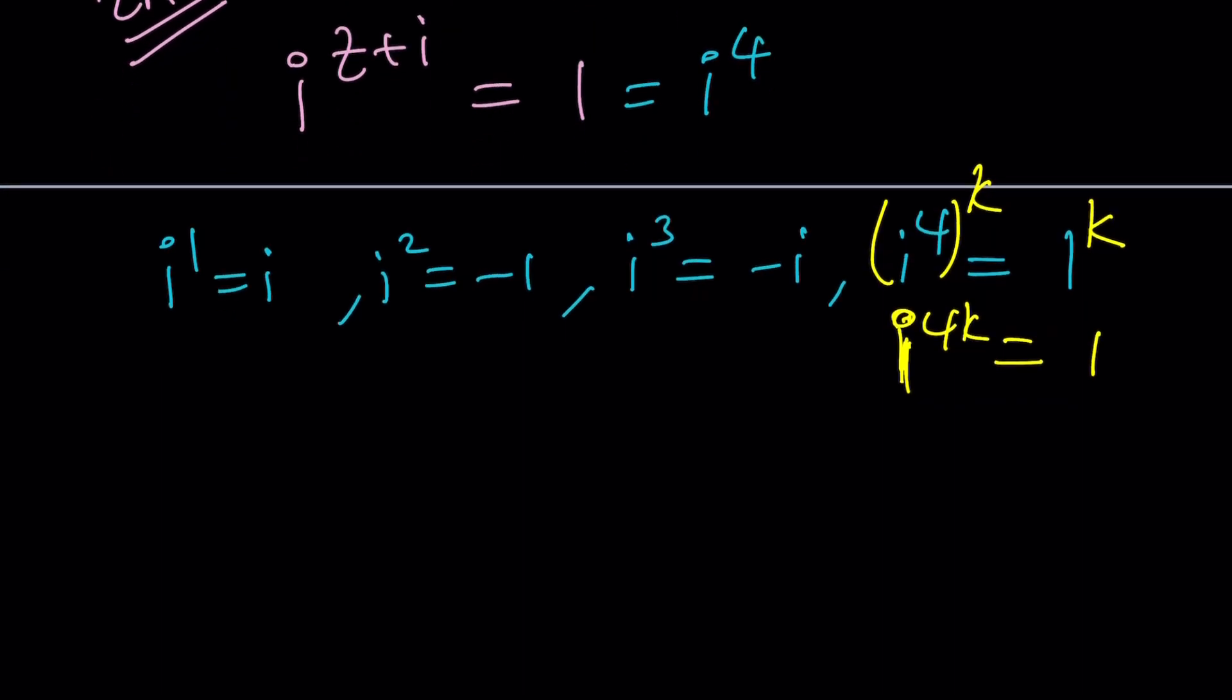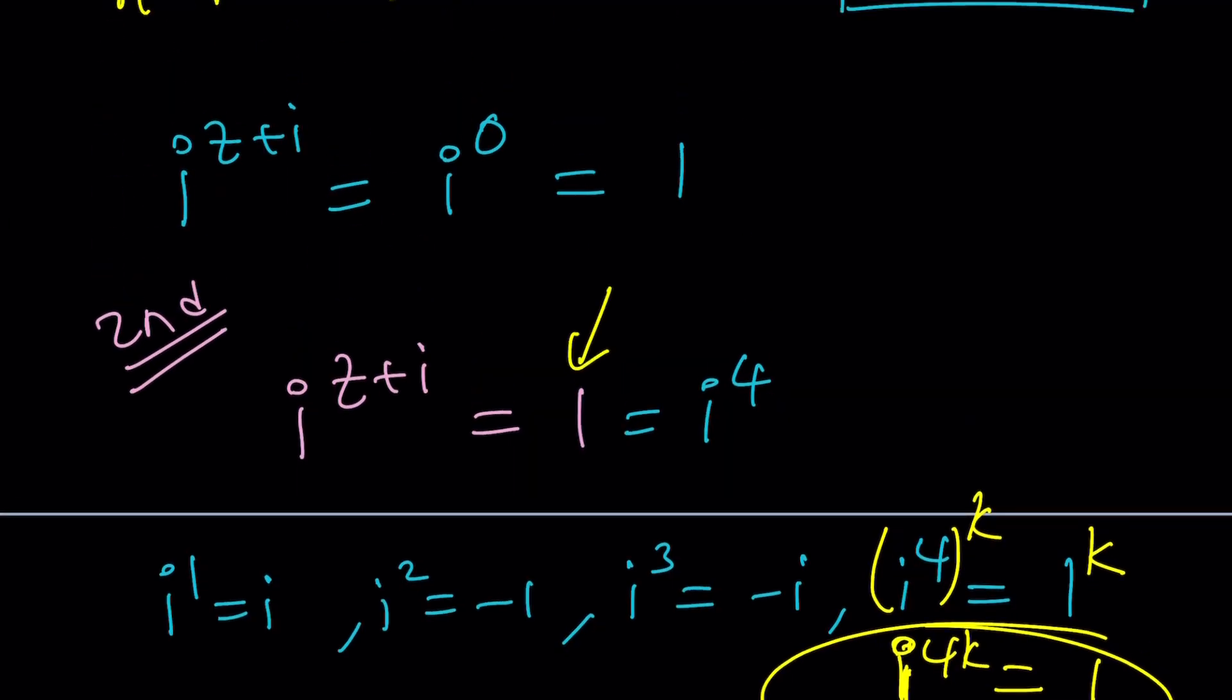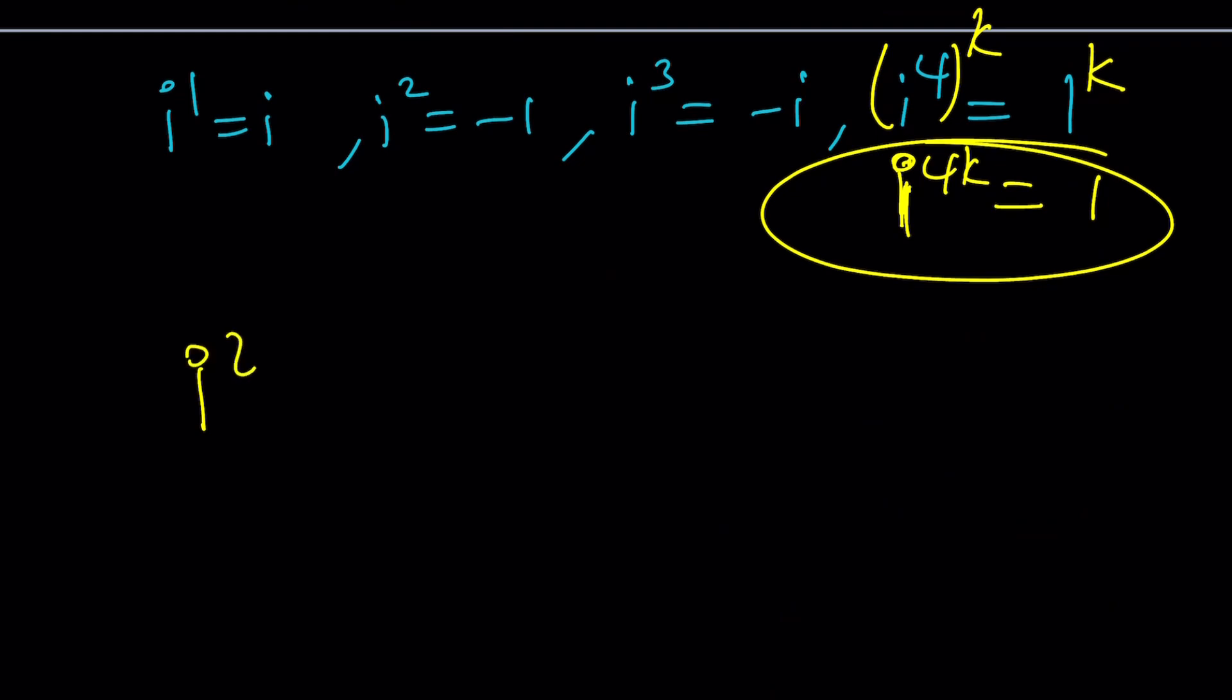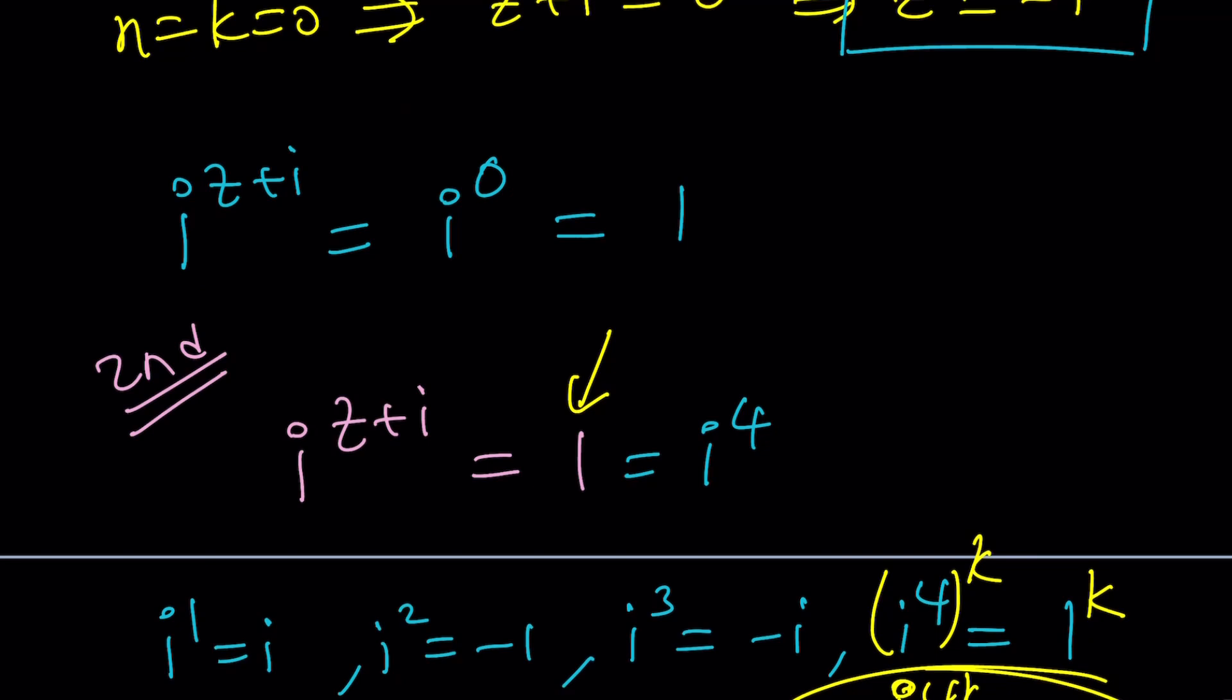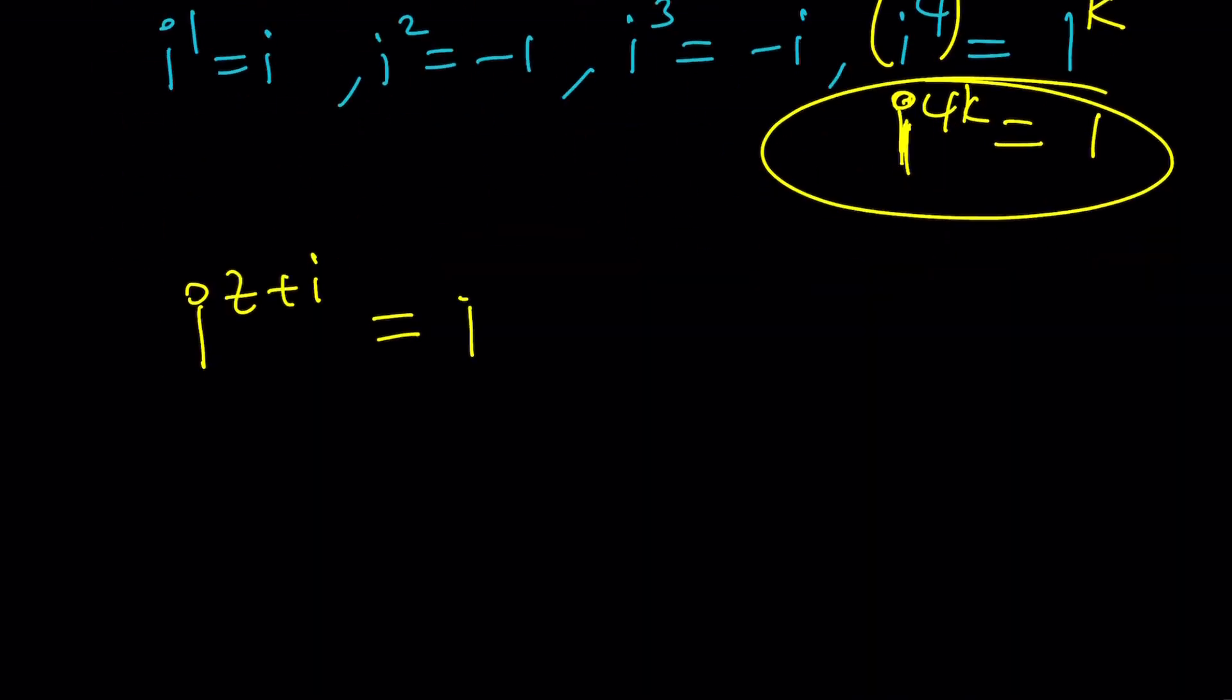Now what do we notice? We notice that one can be written as i to the power 4k but I have one over here. So let's replace it because our goal is to solve for z. I'm going to replace the one with i to the power 4k leaving us with a very simple equation. z plus i is equal to 4k where k is an integer.